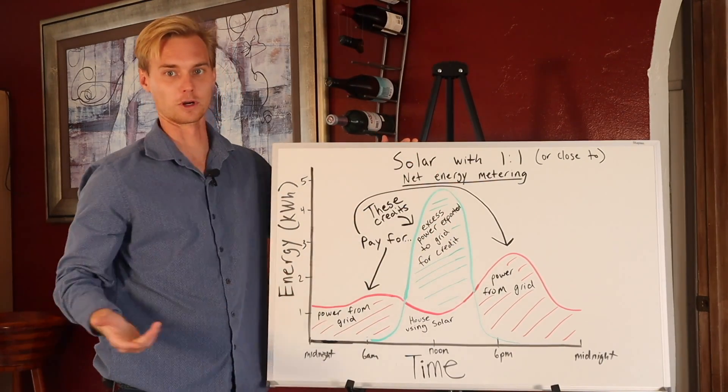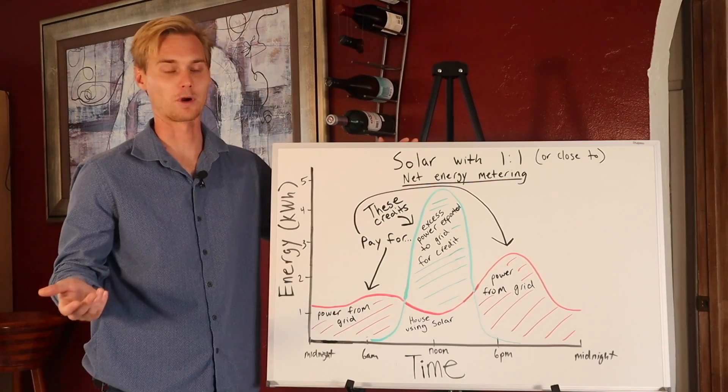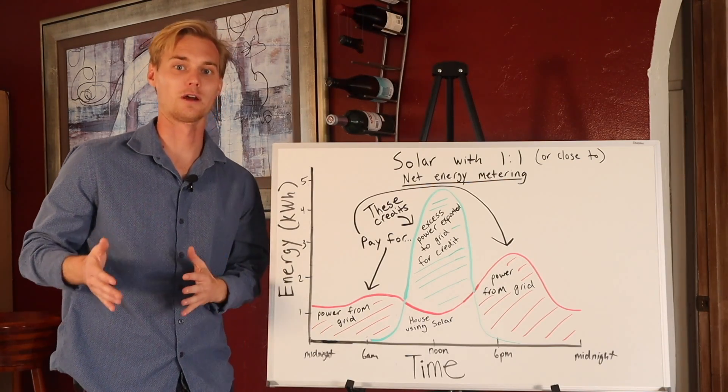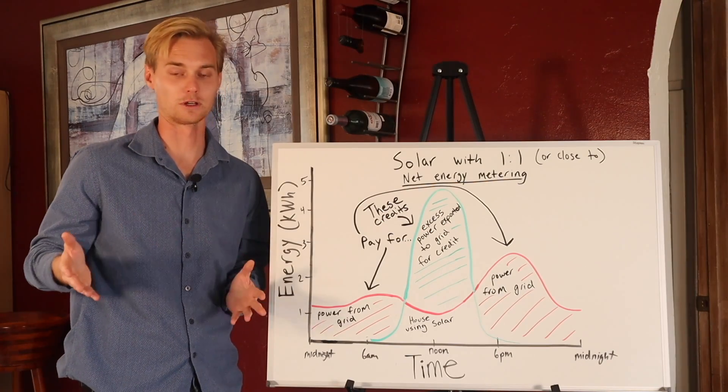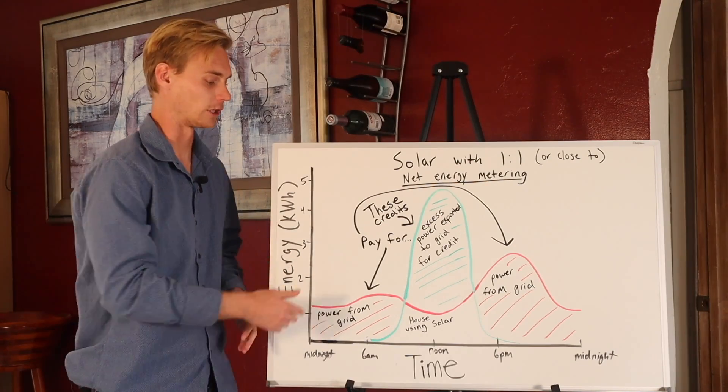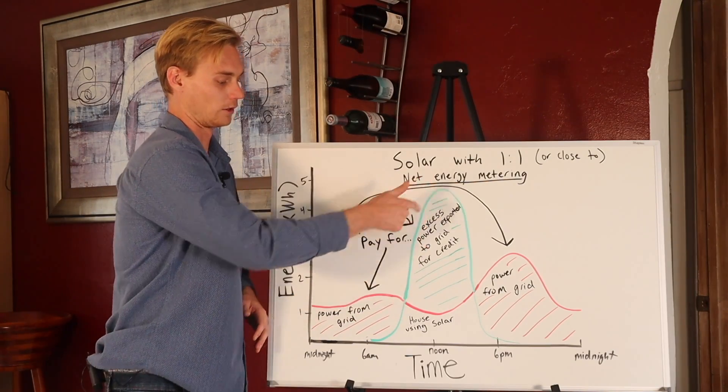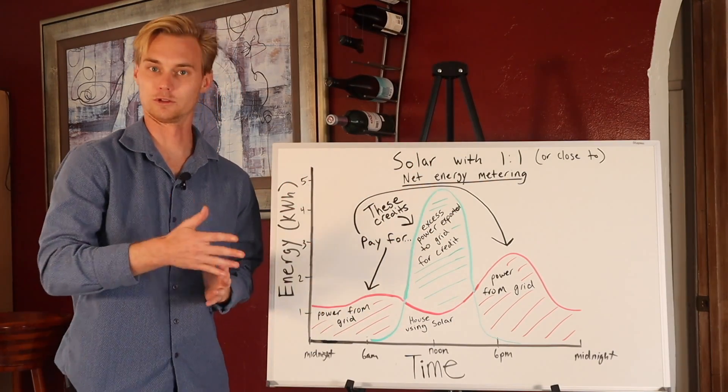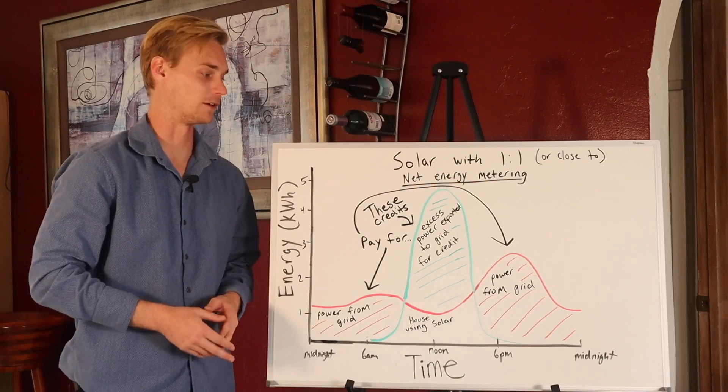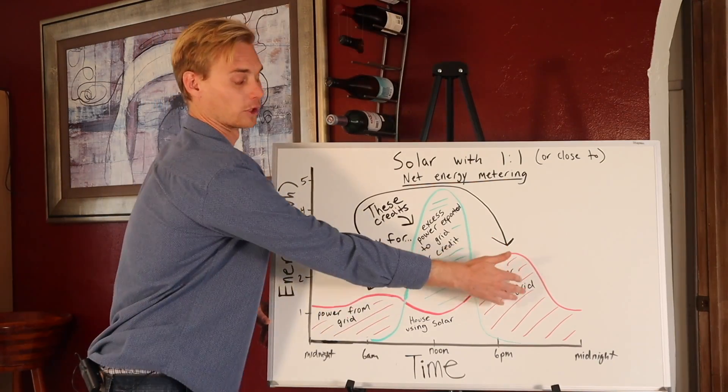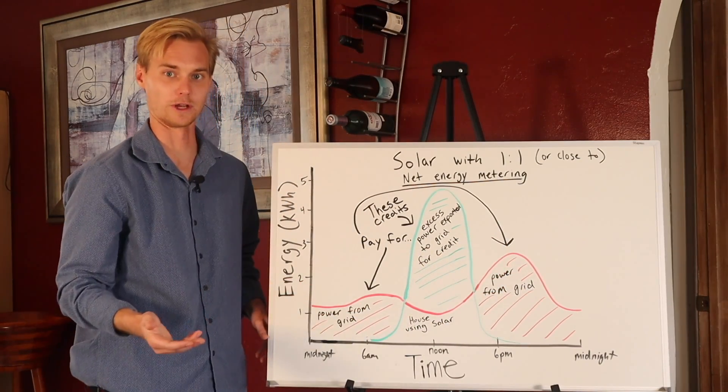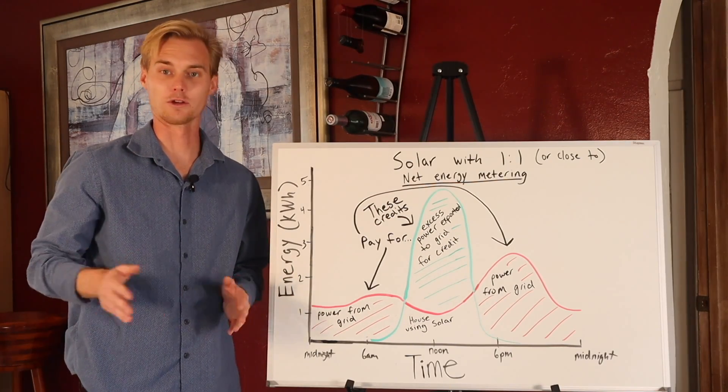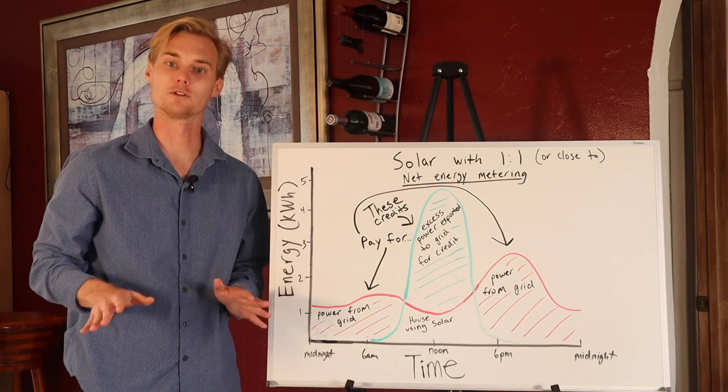But the green line is the solar production, and as you see, we kind of have a problem. The production is not really happening during the time of the usage. And so net metering solves this problem. Basically, anytime when the green line is above the red line, that power is excess and it goes back to the grid. The utility company buys it from you. And then you do pull power from the grid in the evening time and in the middle of the night, but the credits just pay for it. It zeroes each other out and you're good to go. You don't need a battery, solar itself solves your problem.